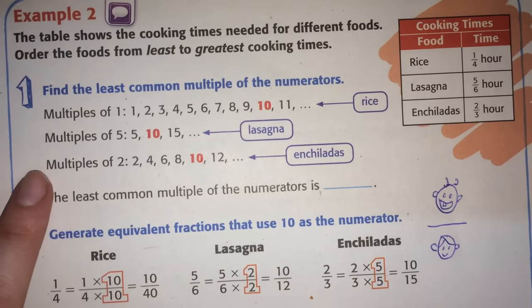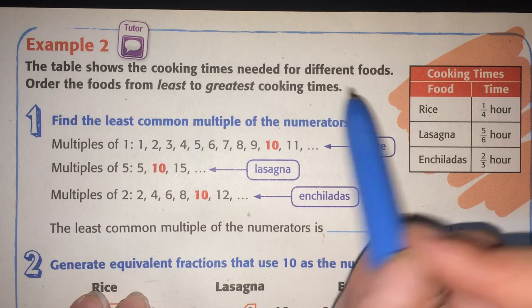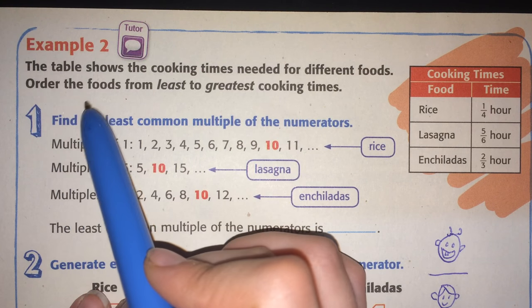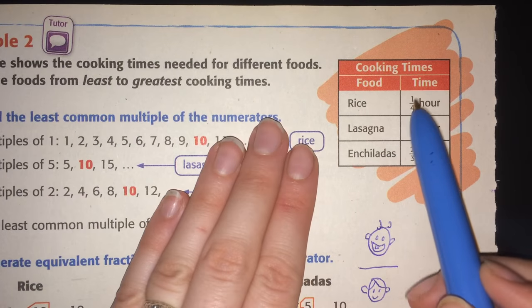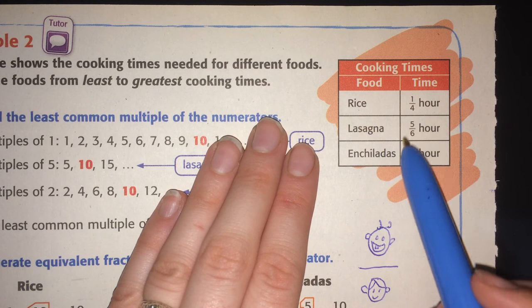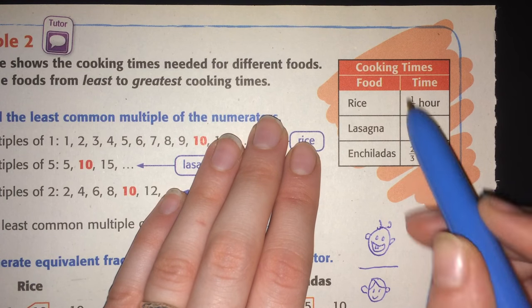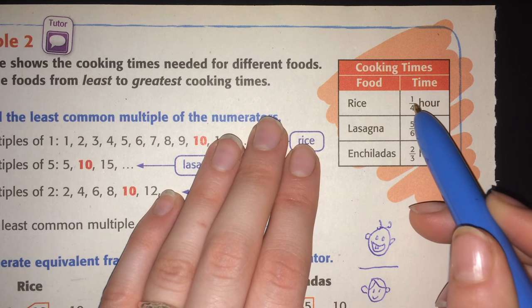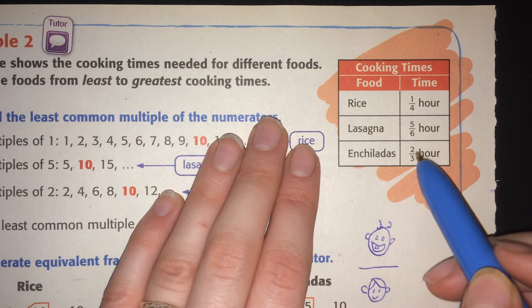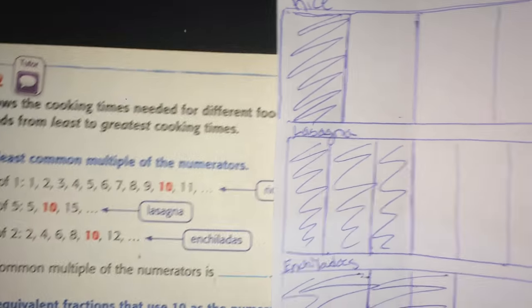So, three-eighths of an inch is longer. Now on the back side, they want to show you how you do it if you make the numerators be equal. The table shows the cooking times needed for different foods. Order the food from least to greatest cooking times. So the rice is cooking time one-fourth of an hour. Lasagna is five-sixths of an hour. And enchiladas are two-thirds of an hour. Again, we cannot compare these just based on which numbers are bigger. If the denominators are not equal or the numerators are not equal.